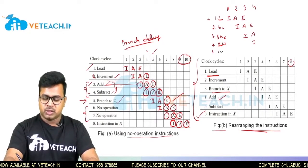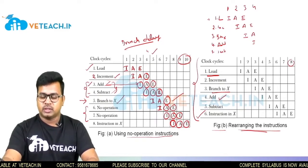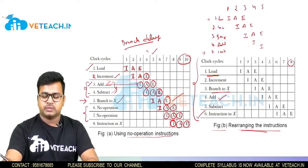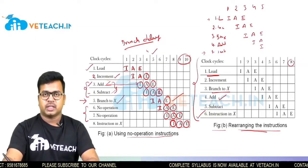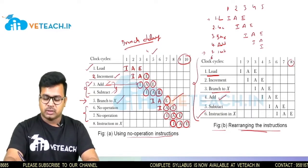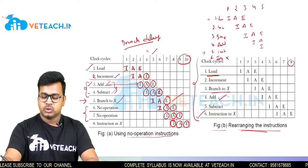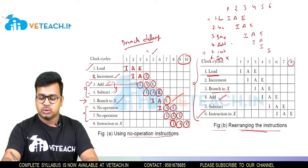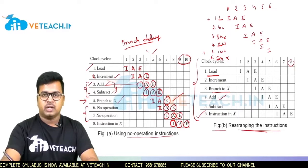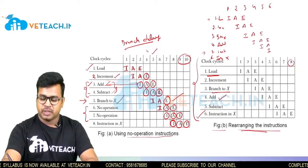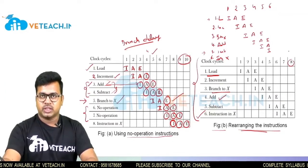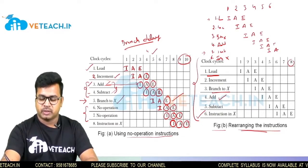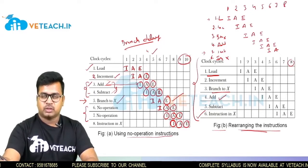At clock cycle 5, the SUBTRACT operation enters. INCREMENT completes execution and ADD moves to the ALU phase. At clock cycle 6, instruction X is entered. ADD completes execution and SUBTRACT moves to the ALU phase. One more clock cycle completes the SUBTRACT operation at the seventh position.